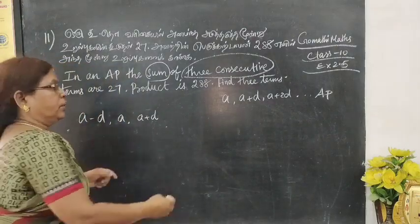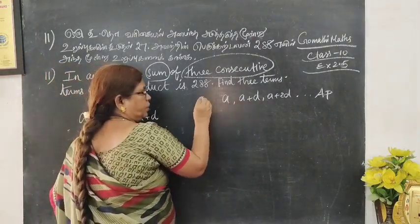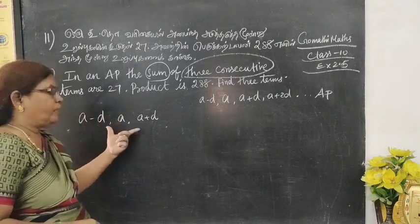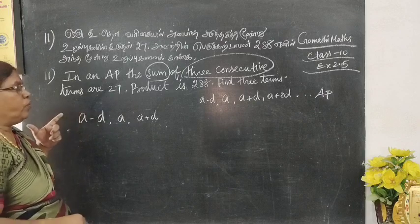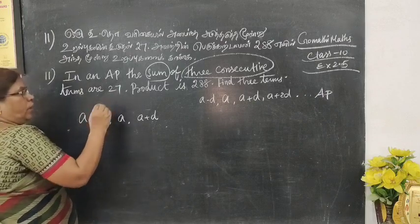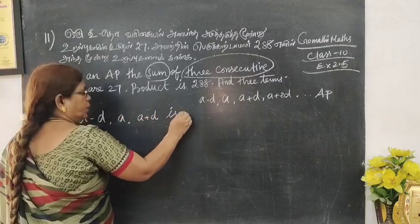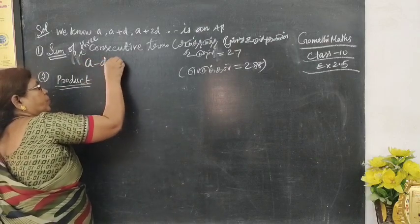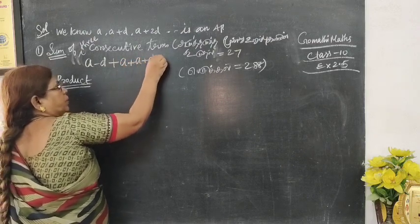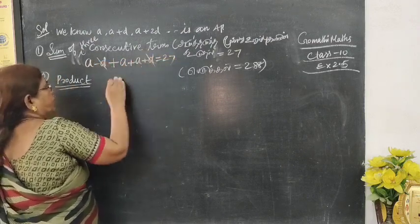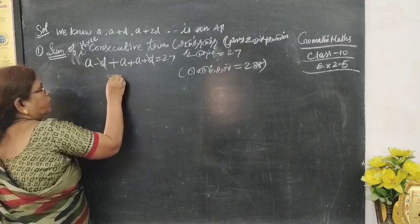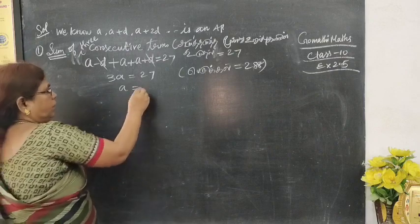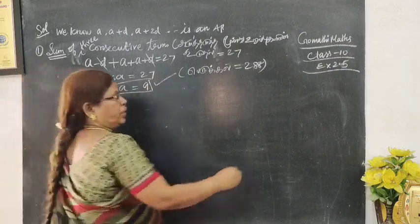The three terms are a-d, a, and a+d. So a minus d plus a plus a plus d equals 27. The minus d and plus d cancel, so 3a equals 27. Then what is a? 27 divided by 3, so a equals 9.